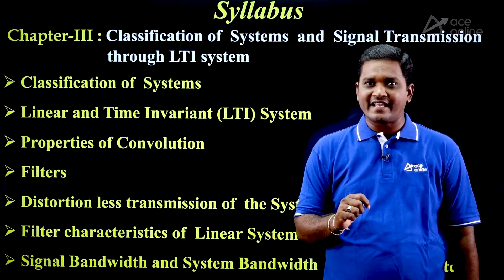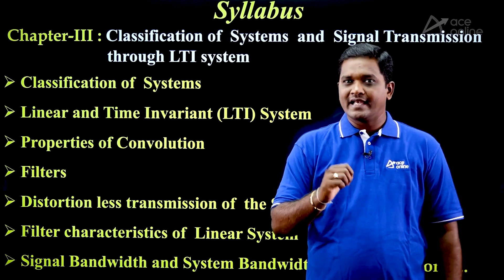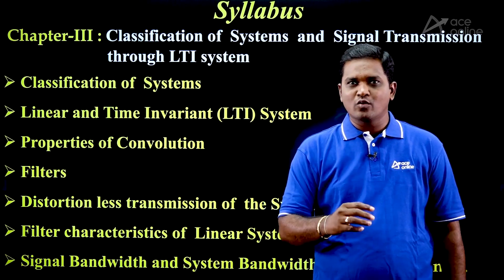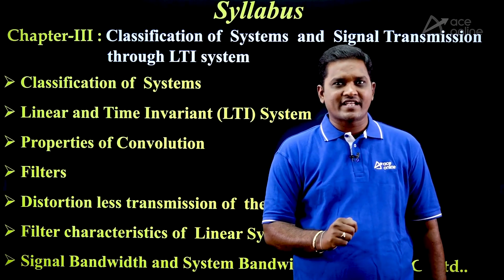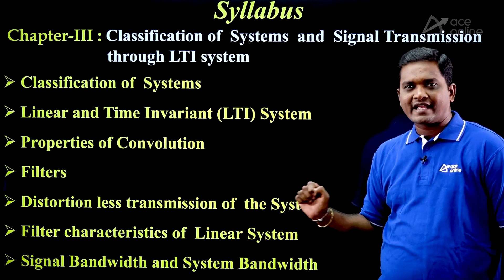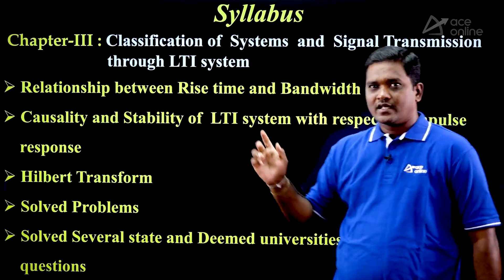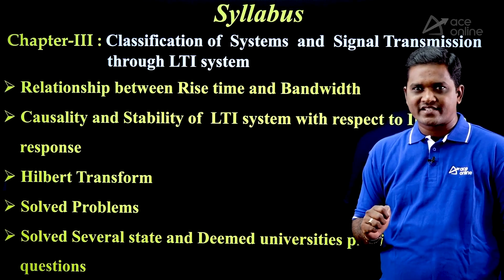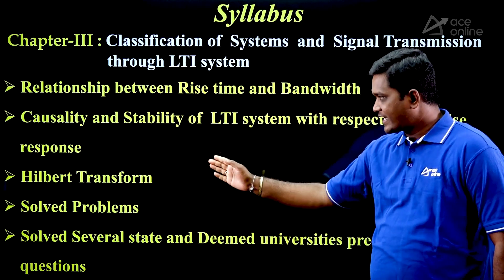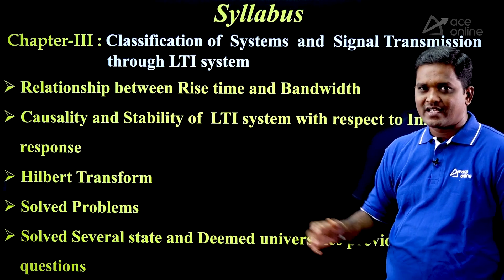Chapter 3 covers Classification of Systems and Signal Transmission through LTI Systems. Topics include: classification of systems, linear and time-invariant systems, properties of convolution, filters, distortionless transmission through a system, filter characteristics of a linear system, signal bandwidth and system bandwidth, relationship between rise time and bandwidth, causality and stability of LTI systems with respect to impulse response, and Hilbert Transform.